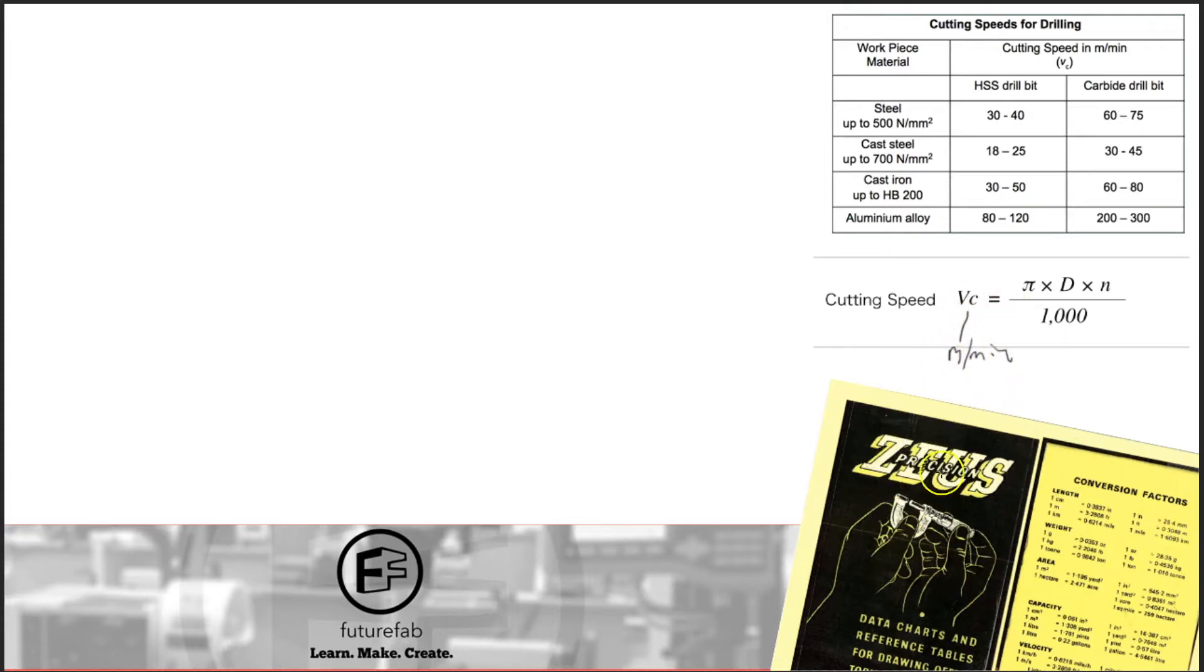The age old is the Zeus charts. Quite often apprentices are issued with these when they start, but you can look them up online. The engineering workshop I used to teach in actually had it pinned up onto the wall for various values.